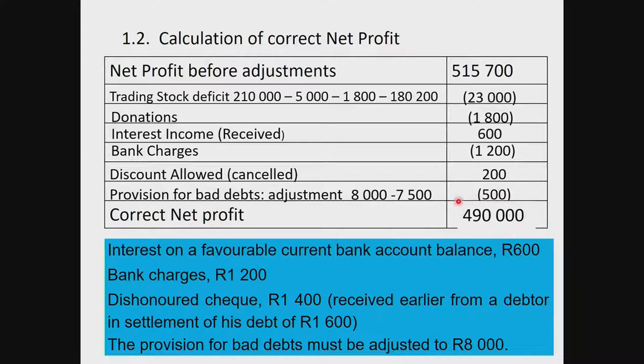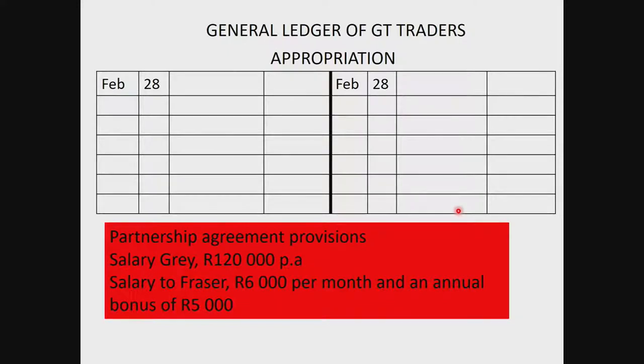Now we use that net profit of 490,000 further in the activity. In the third block, we complete the appropriation account. The appropriation account shows how the net profit of 490,000 is going to be apportioned or divided among the partners. We start with 490,000 in the general ledger appropriation account.